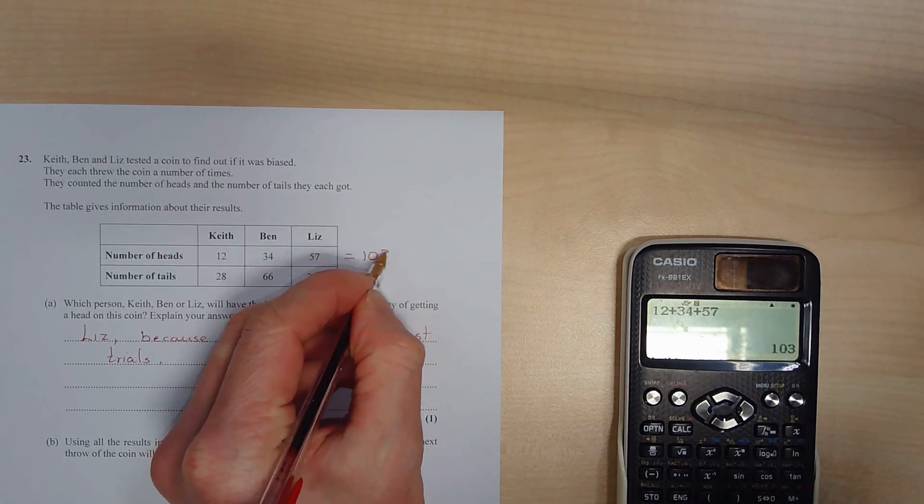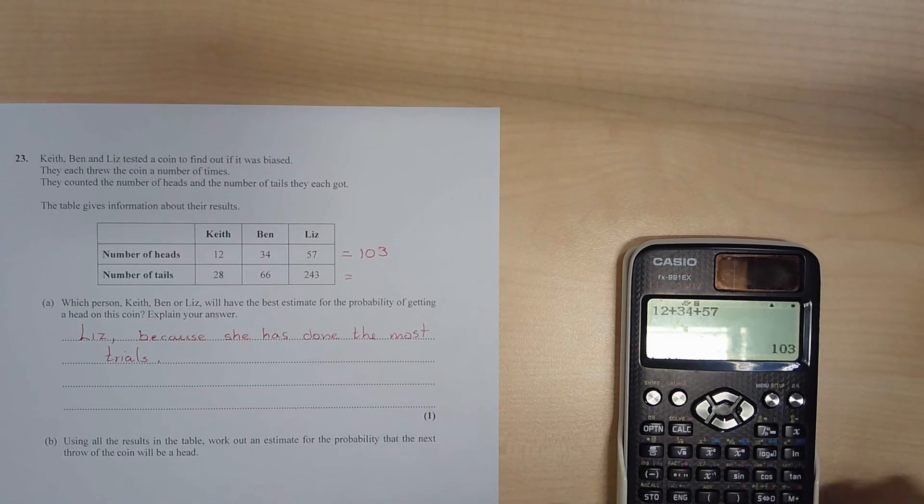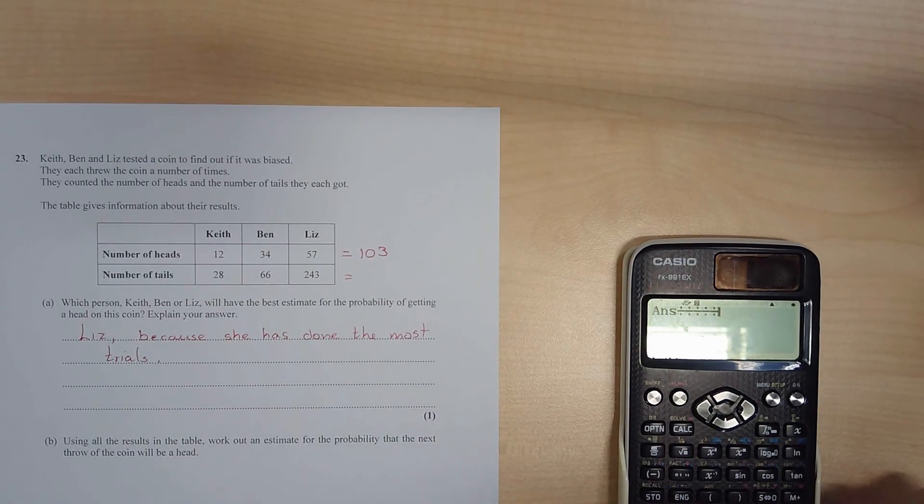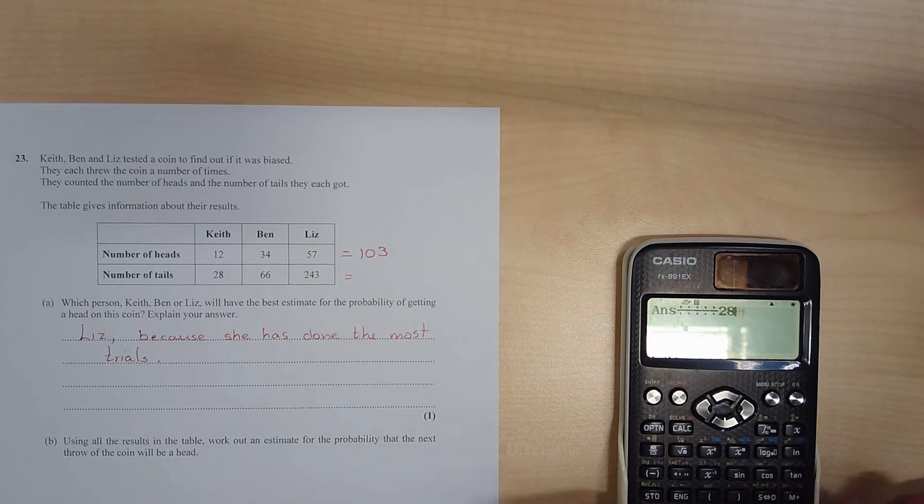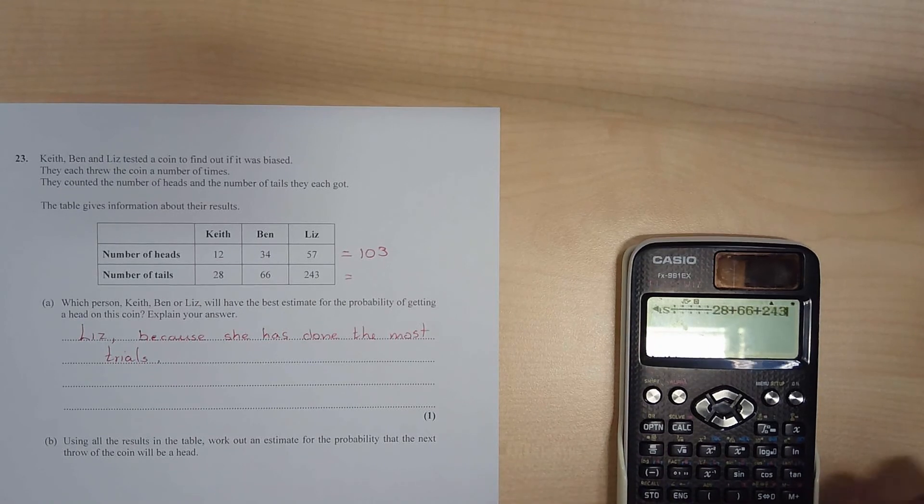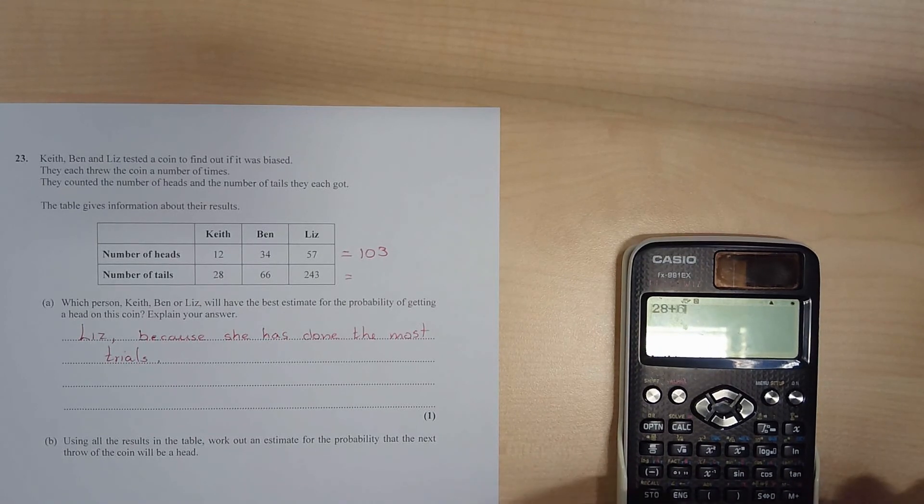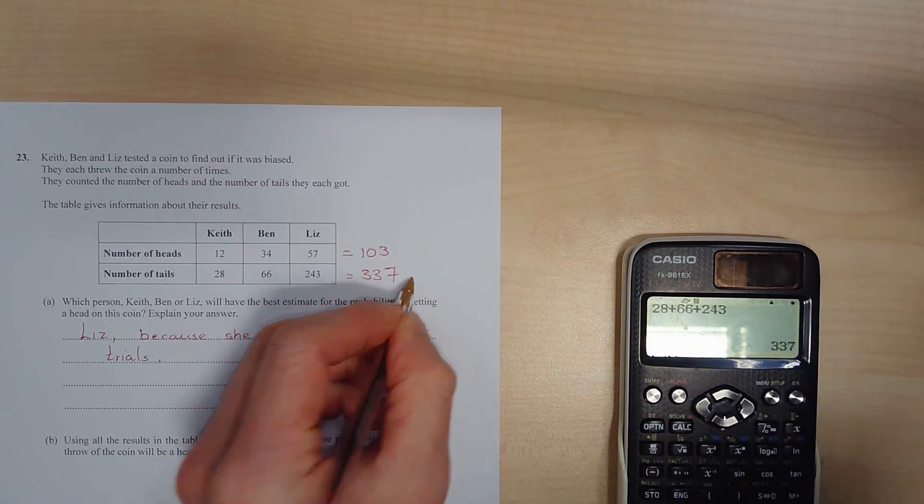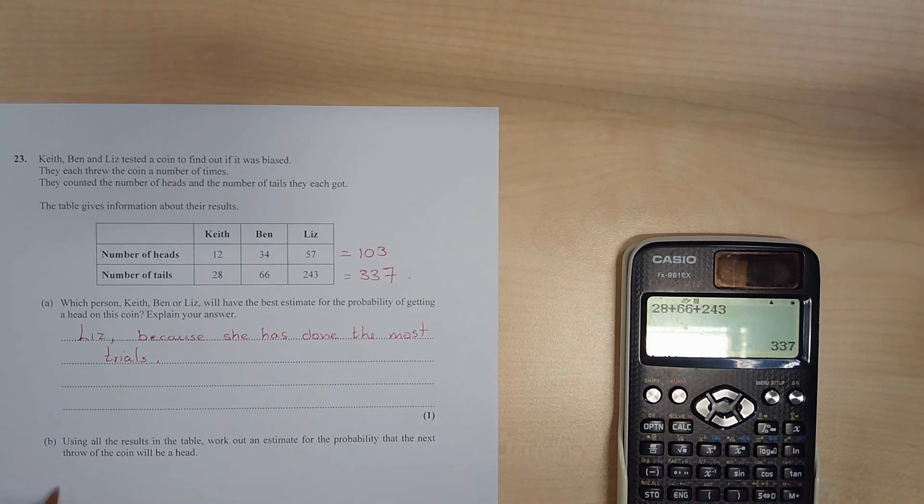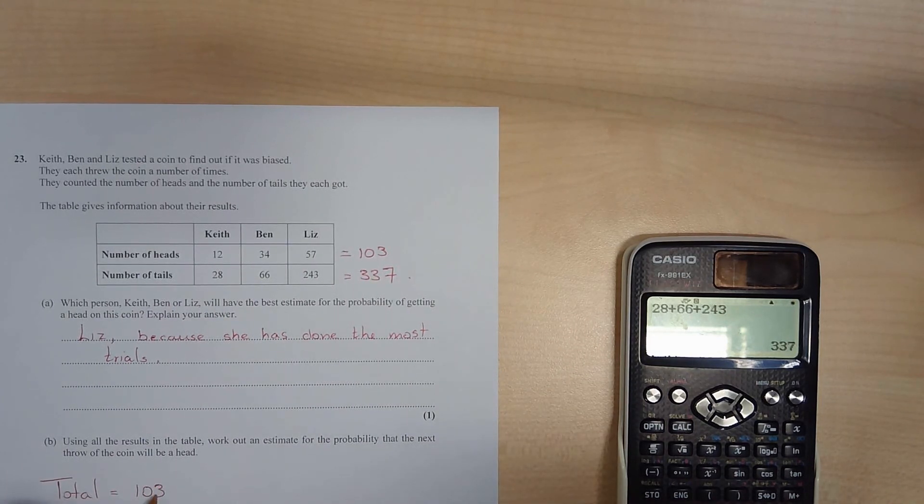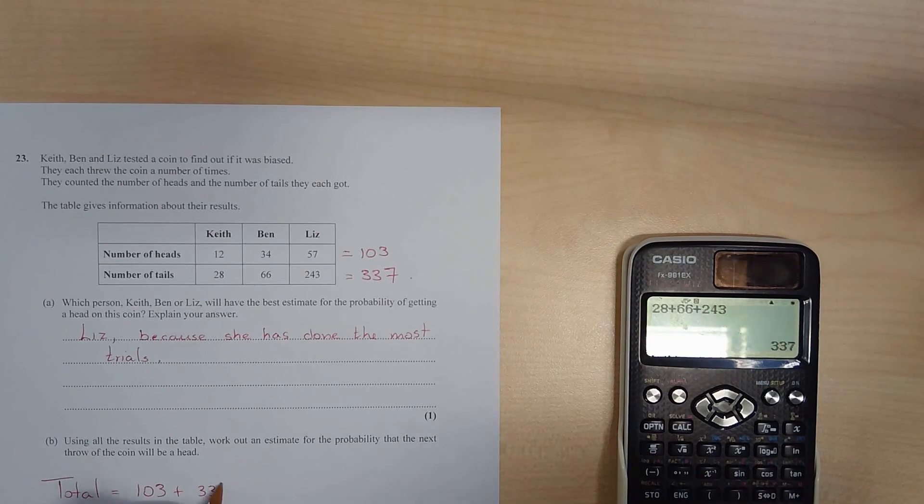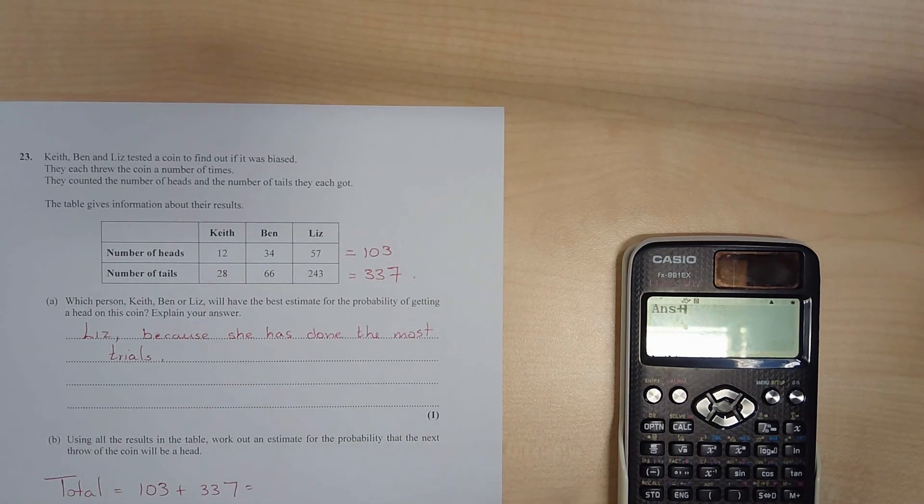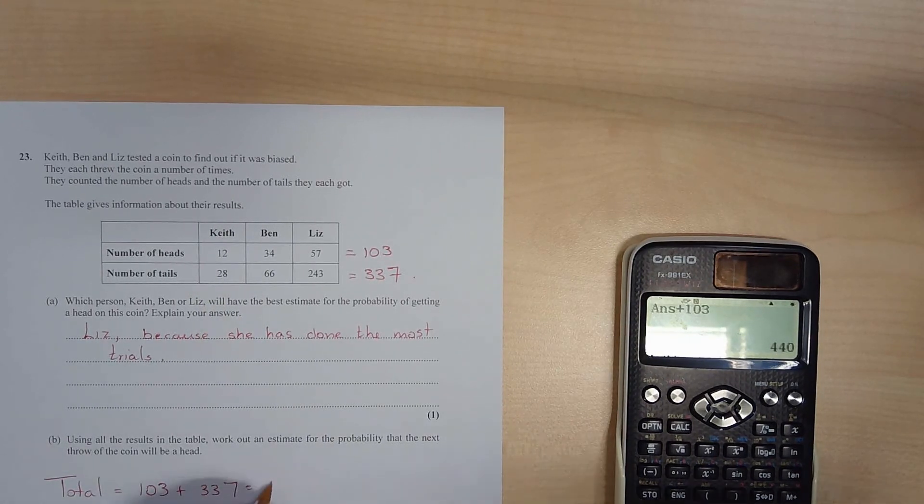So it's got heads 103 times out of, well tails is 28 plus 66 plus 243, so there's been 337 tails. So total will be 103 plus 337, which is 440.